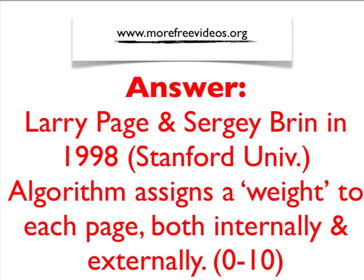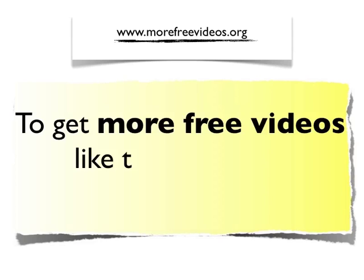To summarize: Google PageRank is a link-based, link analysis algorithm. It assigns weights and points to each page based on those links. This can happen within your site — you can send link value to your own pages — and of course externally, as in the CNN example. I hope this was useful. Watch for more videos in our series.